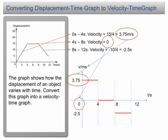This example shows how we convert a displacement time graph to a velocity time graph. A displacement time graph can be converted to a velocity time graph by finding the velocity from the gradient of the graph.